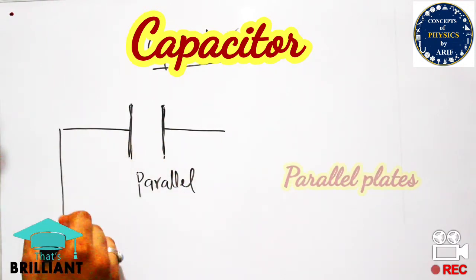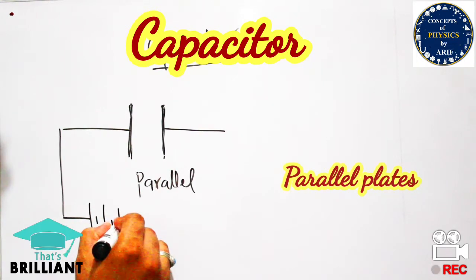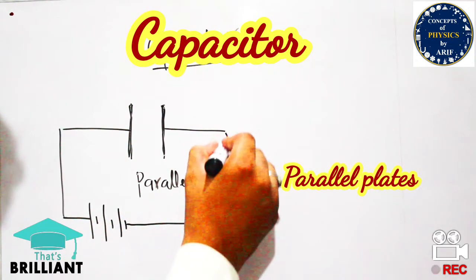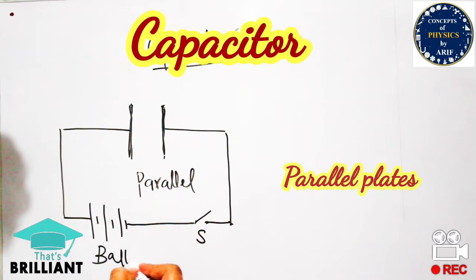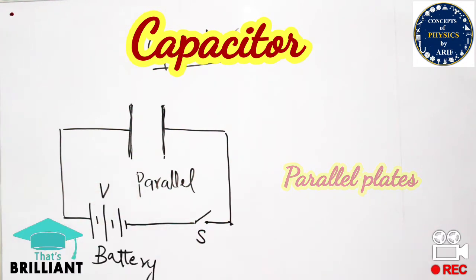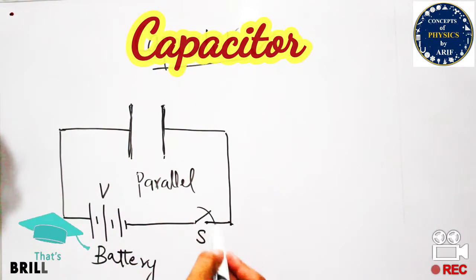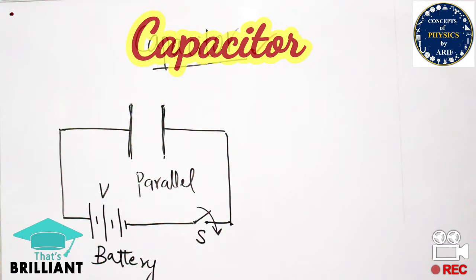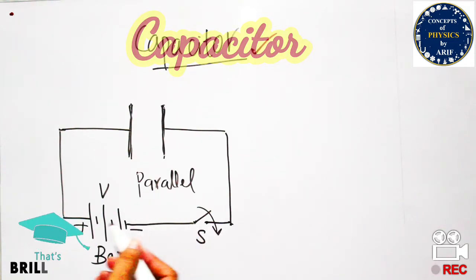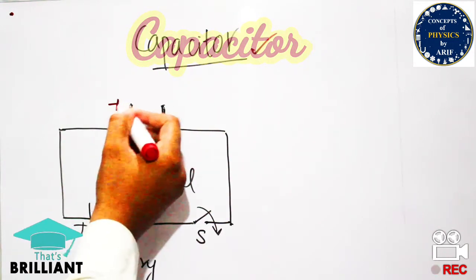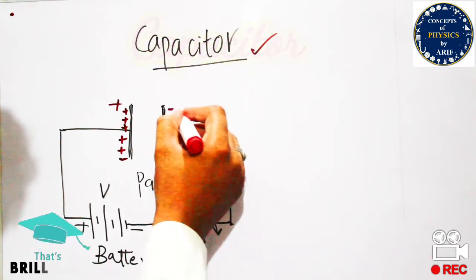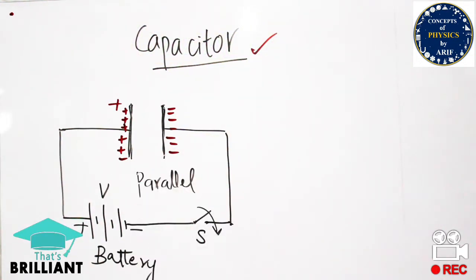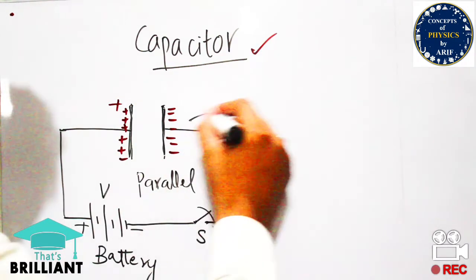At first, these two parallel plates alone are not a capacitor. If one plate is connected to the positive terminal of the battery and the other plate is connected to the negative terminal, along with a switch — when the switch is closed, current or voltage starts flowing. The positive terminal places positive charge on its plate, making it a positive plate, while the other terminal makes its plate a negative plate.